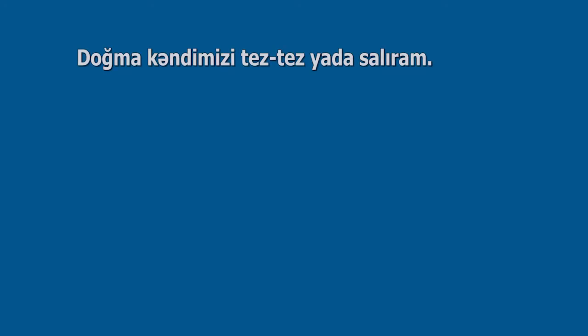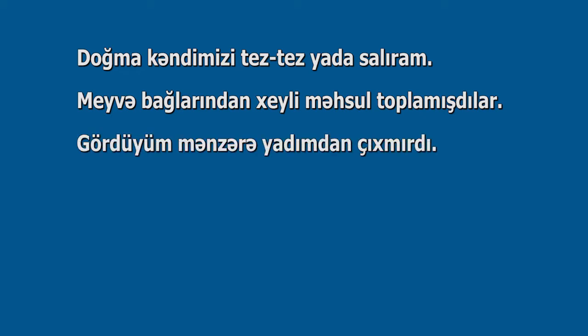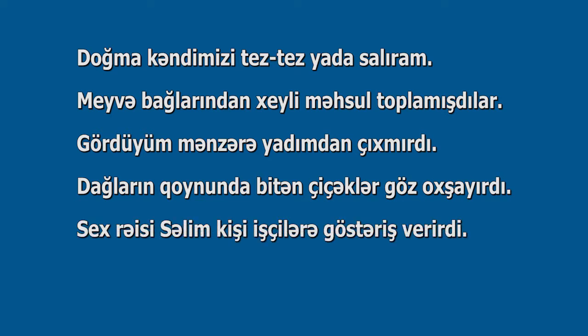Təyin. Cümlədə isim və isimləşmiş sözləri təyin edib necə, nə cür, hansı, neçə, neçənci suallarından birinə cavab verir. Təyinlər sifət, say, işarə və təyin əvəzliklərlə, feyli sifət və feyli sifət tərkibləri ilə, ismi birləşmələr və mürəkkəb adlarla ifadə olunur. Nümunələr: Doğma kəndimizi tez-tez yada salıram. Meyvə bağlarından xeyli məhsul toplamışdılar. Gördüyüm mənzərə yadımdan çıxmırdı. Dağların qoynunda bitən çiçəklər göz oxşayırdı. Sex rəisi Səlim kişi işçilərə göstəriş verirdi.